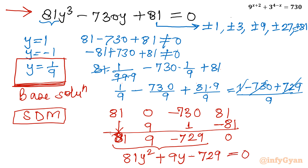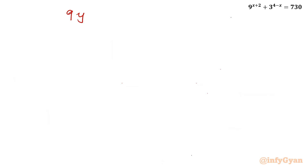The equation 81y² plus 9y minus 729 is divisible by 9 — as we can see 81, 9, and 729 are all divisible by 9. So dividing by 9, we get our equation 9y² plus y minus 81 equal to 0.